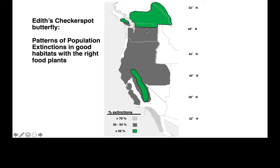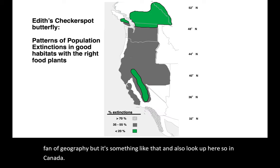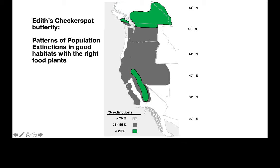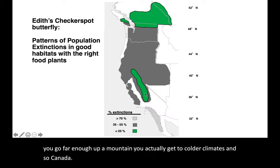In Canada, up there, there are still plenty of Edith's checkerspots — they're not going extinct. So what's the difference? Edith's checkerspots are going extinct in places that are hot, think Mexico, and in places that are low to the ground, which also equals hot. They're not going extinct in mountain areas — if you picture a mountain, you probably picture it with snow on top, which tells you that if you go far enough up a mountain, you get to colder climates. Canada and mountaintops are now the two places where Edith's checkerspot seems to be hanging on.